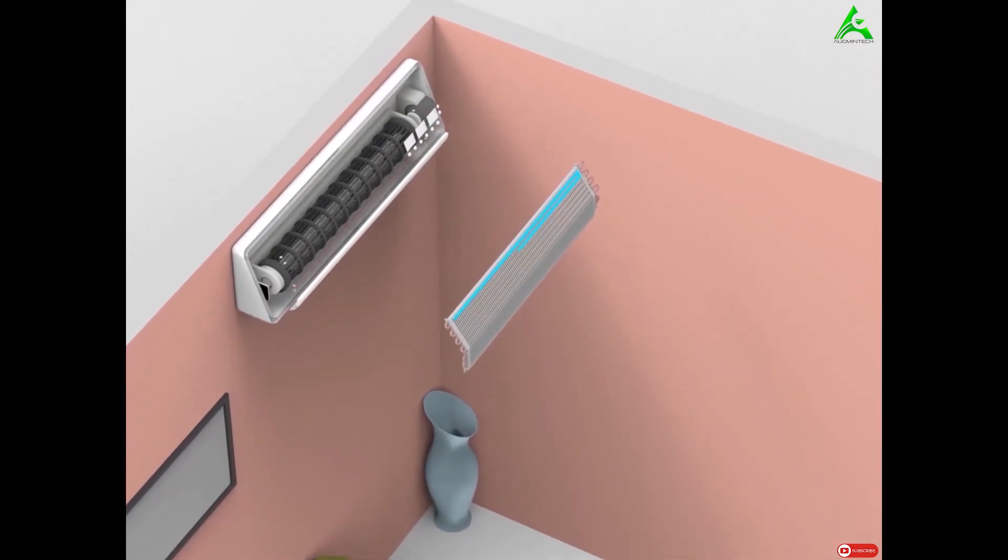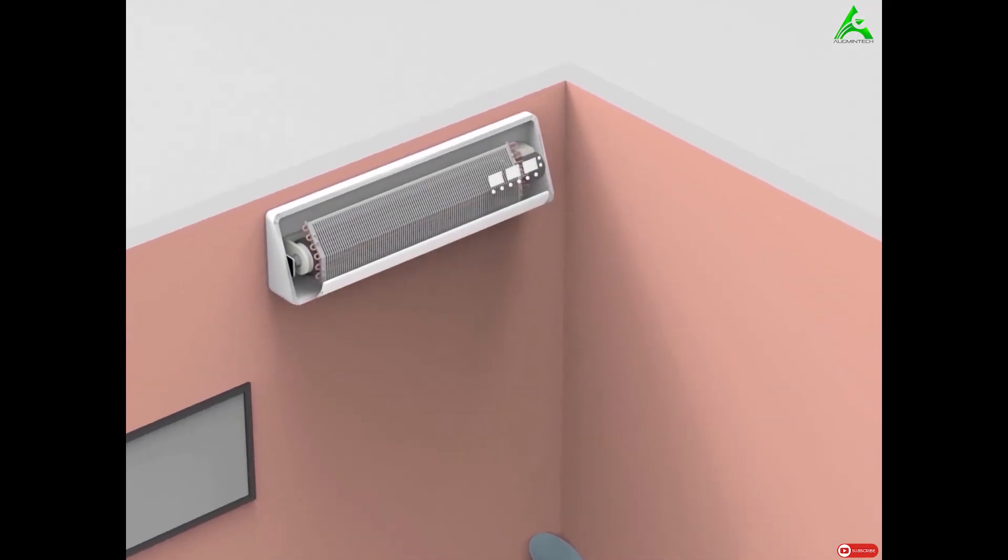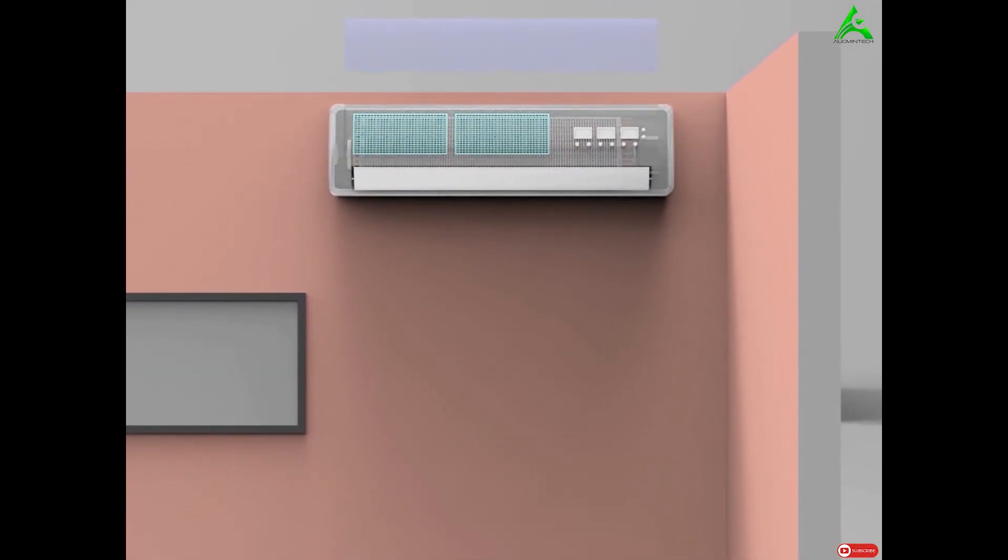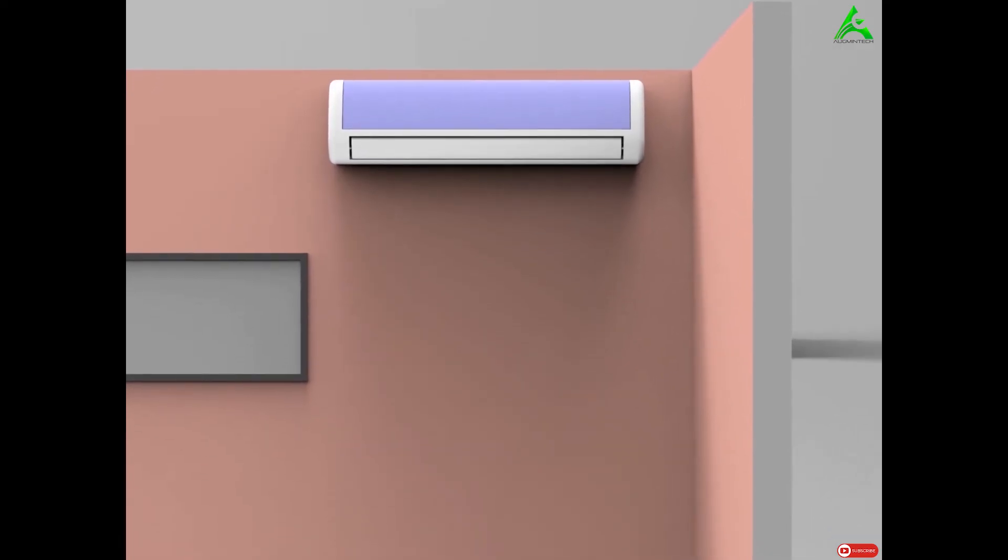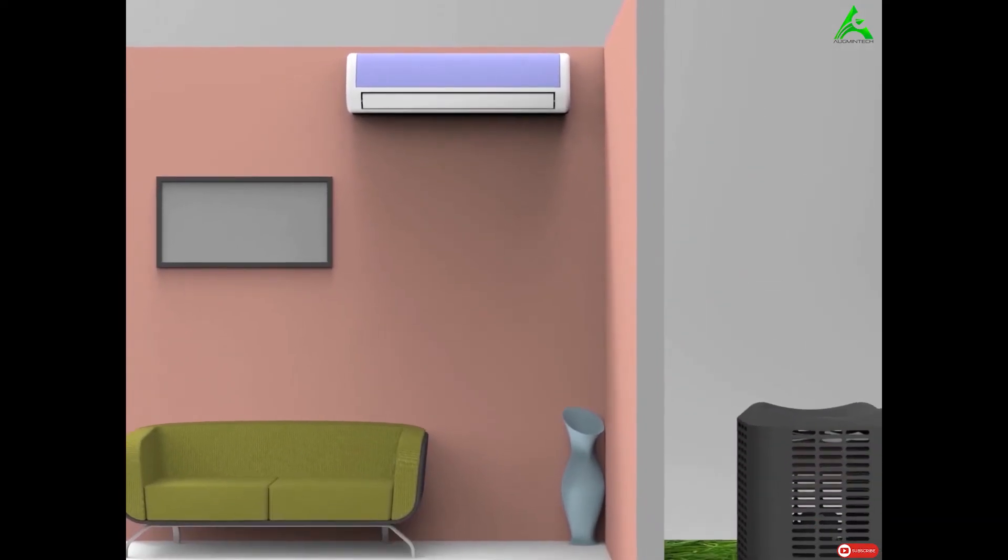It then flows to the evaporator coil in the indoor unit, and the cycle starts again. This is how a split air conditioner performs cooling.